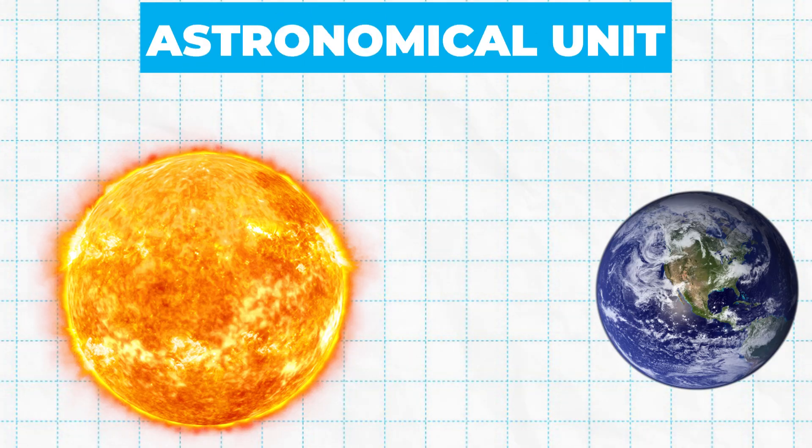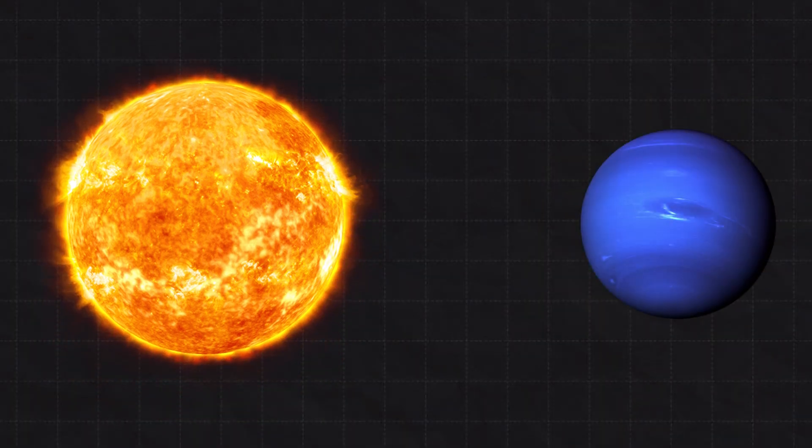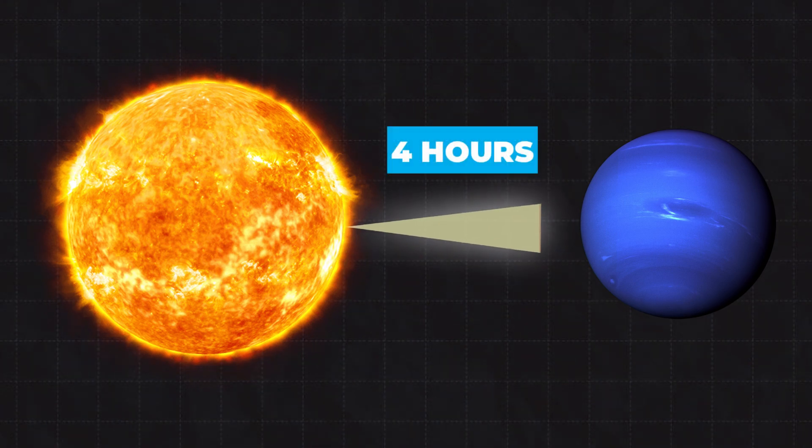For context, an astronomical unit, AU, is the distance from the Sun to Earth, meaning sunlight takes approximately four hours to reach Neptune from its distant orbit.